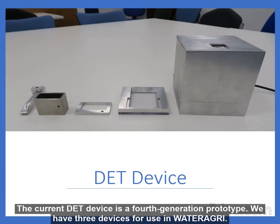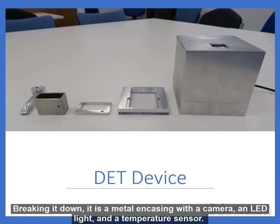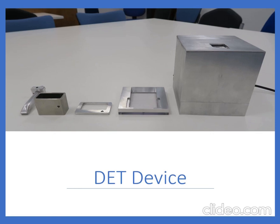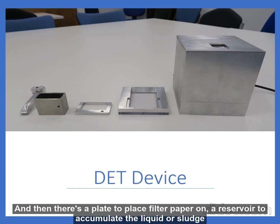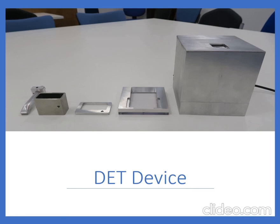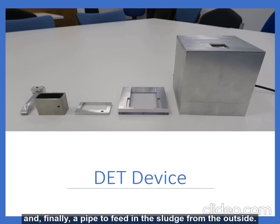The current DET device is a fourth generation prototype. We have three devices for use in Water Agri. Breaking it down, it is a metal encasing with a camera, an LED light, and a temperature sensor. There is also a plate to place a filter paper on, a reservoir to accumulate the liquid or sludge, and finally a pipe to feed in the sludge from the outside.